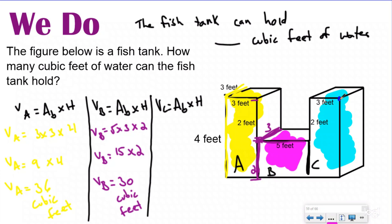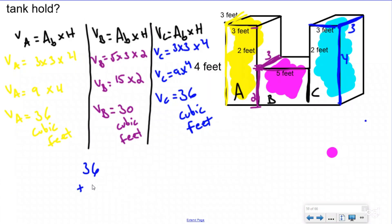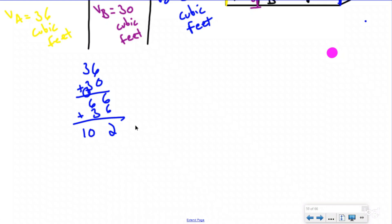For prism C, using my 'p sign' here, I go all the way down — I want the whole prism but not crossing into another prism. Opposite parallel, my height is 4, my length is 3, and my width is also 3. Volume of C: 3 times 3 is 9, times 4 is 36 cubic feet — the exact same as prism A. Adding all three together: 36 plus 30 is 66, plus 36 is 102 cubic feet.